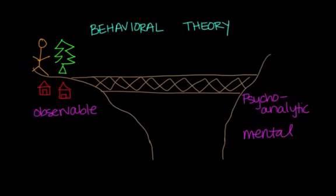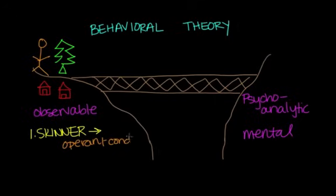So let's talk about two important theorists of the behavioral theory. And the first is Skinner. So Skinner was a strict behaviorist, and he's associated with the concept of operant conditioning, which you may have heard of before. Operant conditioning uses rewards and punishments to increase or decrease a behavior.